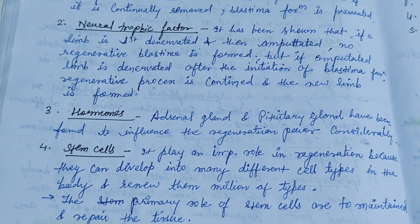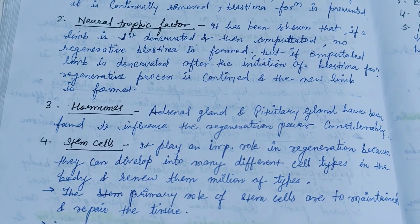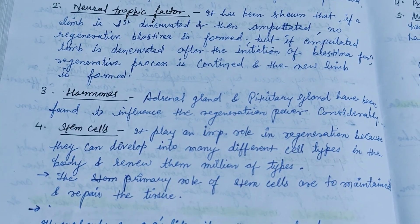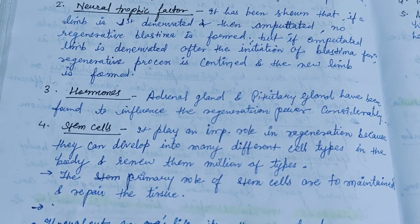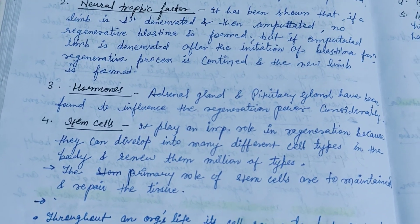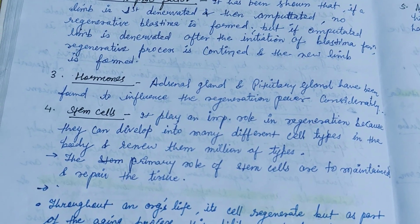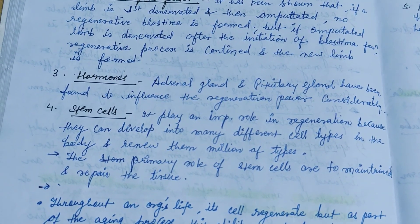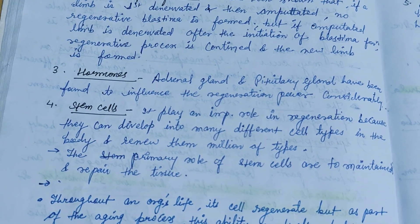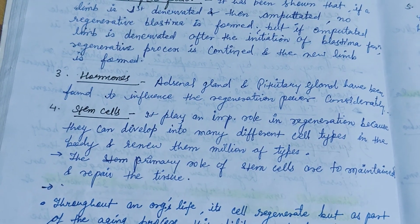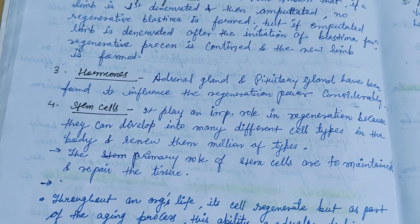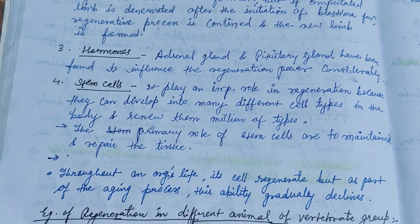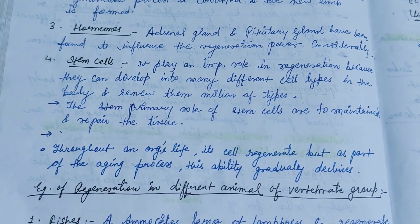Regarding the neurotrophic factor, a new blastema is formed. If the amputated limb is denervated after the initiation of blastema formation, the regenerative process is continued and the new limb is formed.